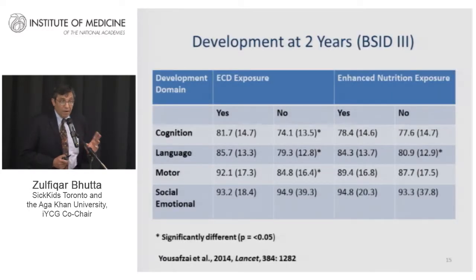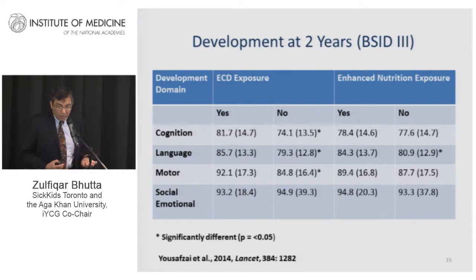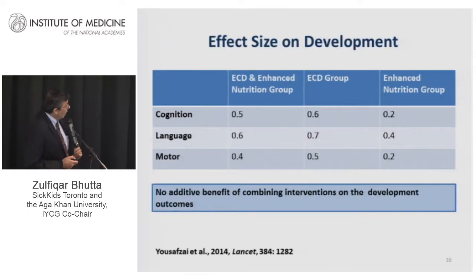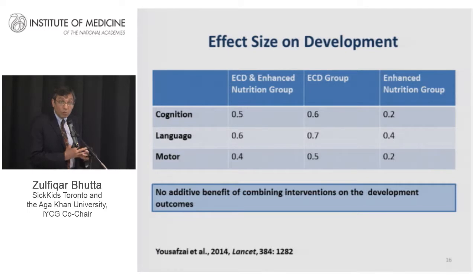The key finding was a pretty significant and notable impact on developmental outcomes. Using the Bayley score at two years of age, the ECD exposure groups — both ECD alone or ECD and nutrition together — showed significant impact on cognition, language, and motor behavior, with less effect on socio-emotional factors. This was significantly better than the enhanced nutrition intervention alone. Notably, there was no additive benefit of adding ECD to the enhanced nutrition group in terms of developmental outcomes — a surprise, since we expected that group would do best.